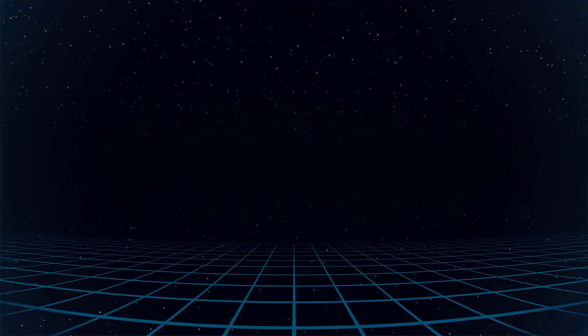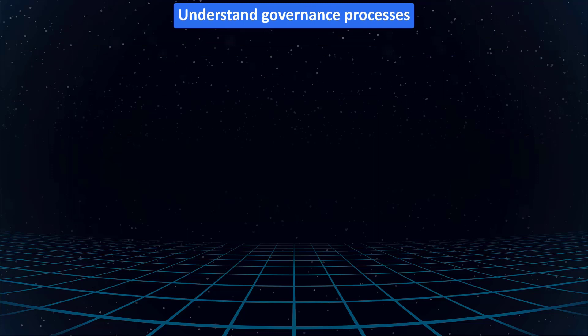Welcome to section 1.5, understanding governance processes — probably the most business-oriented topic for the CISSP exam, or for anyone in security in a technical role, or those involved in governance processes in real life. It's almost like you need an MBA to fully understand the risk management chapter, but for this entry-level exam you just need to know a few definitions and an overview of where they fall into place.